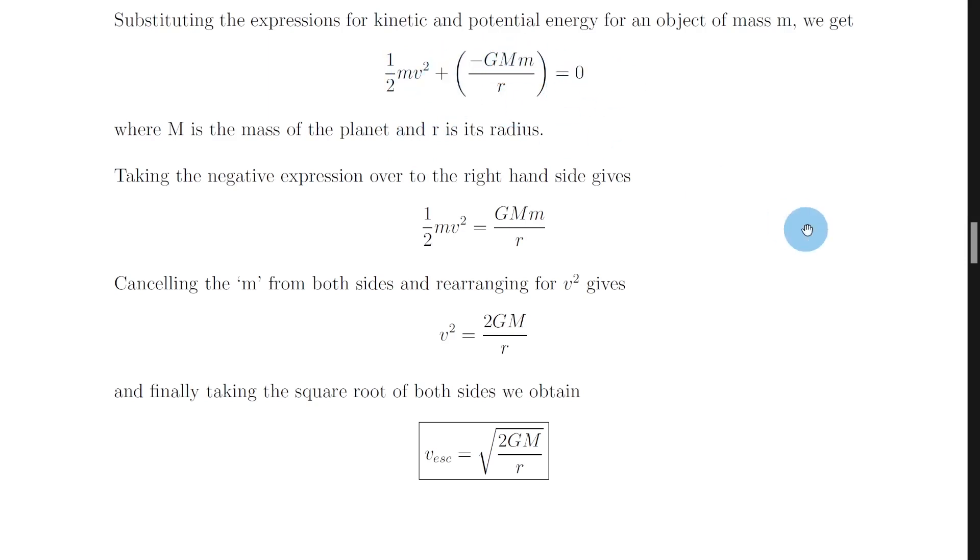because the negative term dominates here, then that means we can add GMm over r to both sides. So we get half mv squared is equal to GMm over r. And then cancelling the little m's from both sides will give us a half v squared is equal to GM over r.